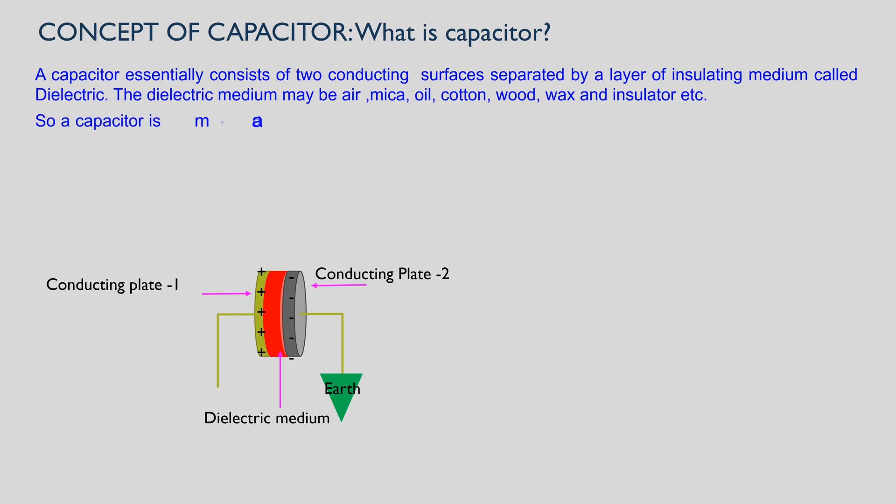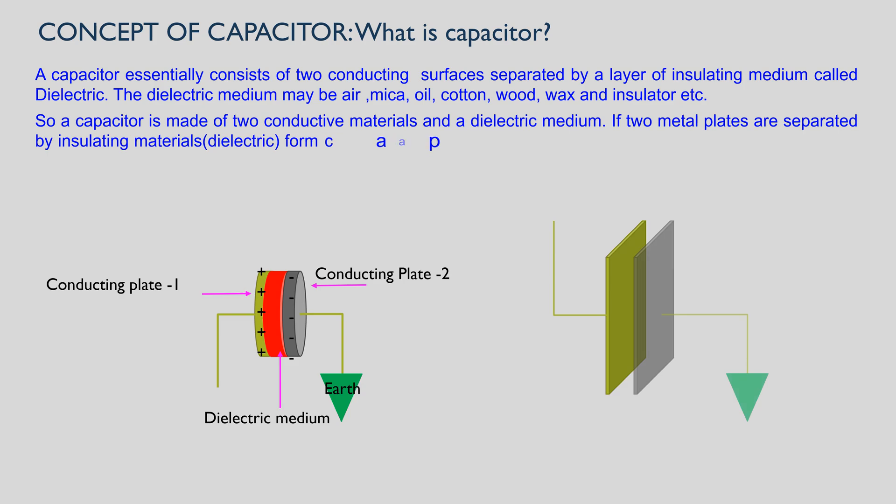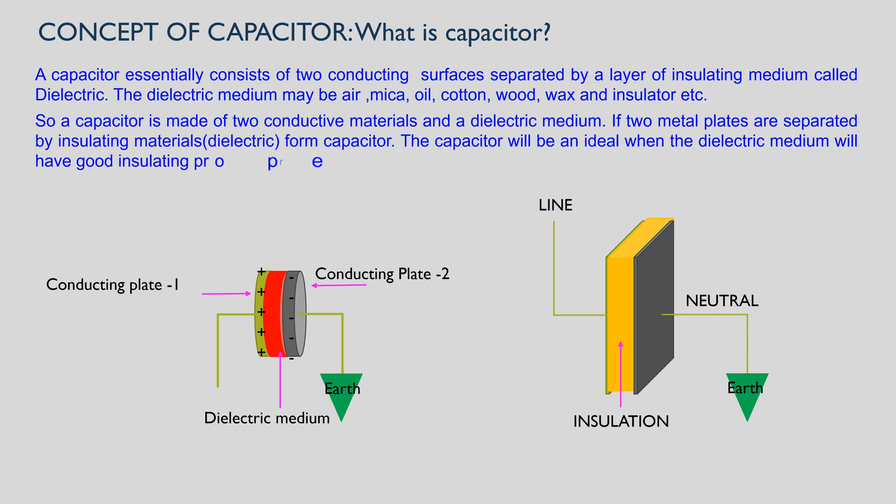So a capacitor is made of two conductive materials and a dielectric medium. If two metal plates are separated by insulating materials or dielectric, they form a capacitor. The capacitor will be ideal when the dielectric medium has good insulating property. Practically, no capacitor is ideal.